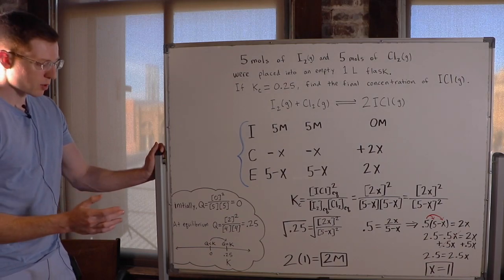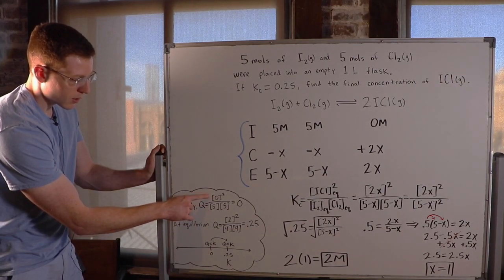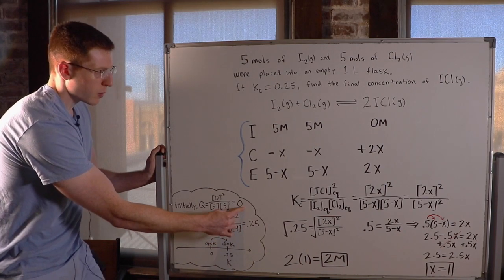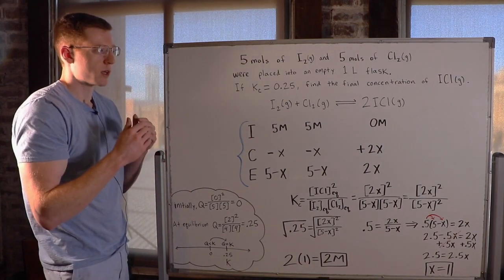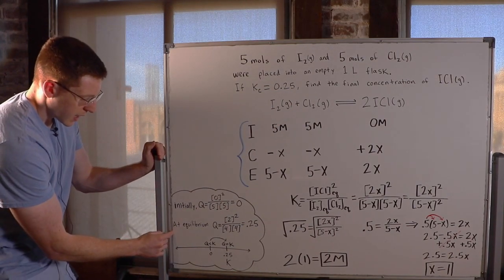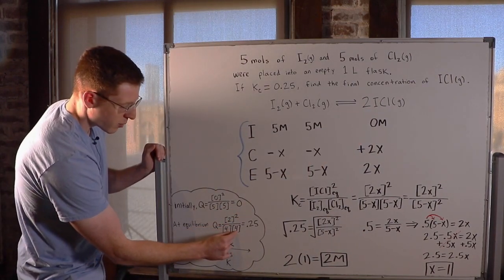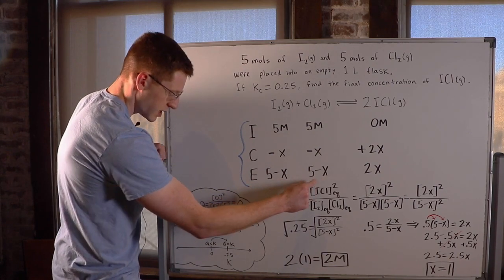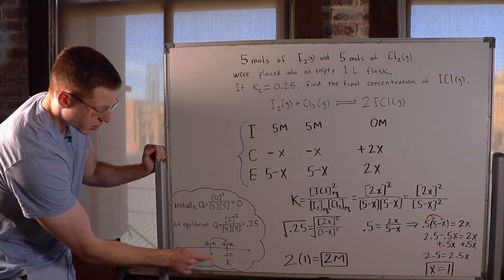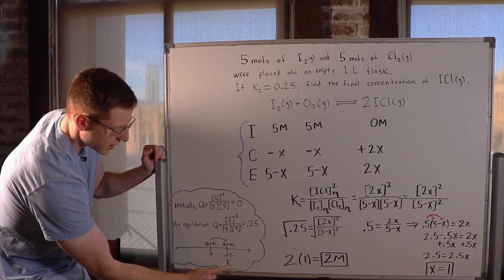Let's think about what happened to Q in this reaction. Initially, Q started at 0, since we had 0 molar of our product and 5 molar each of our reactants. We want Q to reach K, and we're at equilibrium when Q equals K, so Q needs to go from 0 up to 0.25. At equilibrium, with 2 molar ICl and 4 molar each of I₂ and Cl₂, calculating Q gives exactly 0.25 — confirming Q increased from less than K to equal K.